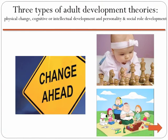The developmental perspective of adult learning focuses on the progressive aspect of becoming an adult. It is not a status that is achieved instantaneously. Adult development theories are generally divided into three types: physical changes, cognitive or intellectual development, and personality and social role development.